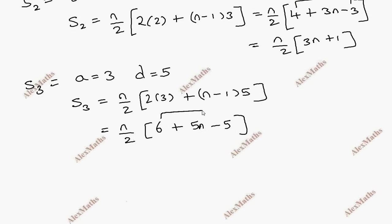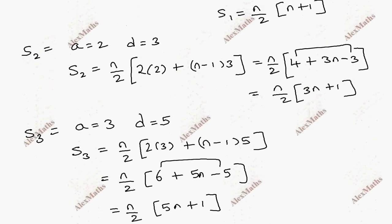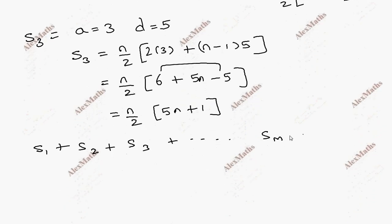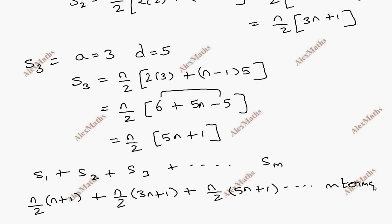For s3, we get n by 2 into 5n plus 1. Now we are going to find the series s1 plus s2 plus s3 plus dot dot dot sm. We substitute: n by 2 into n plus 1, n by 2 into 3n plus 1, n by 2 into 5n plus 1, and so on up to m terms.